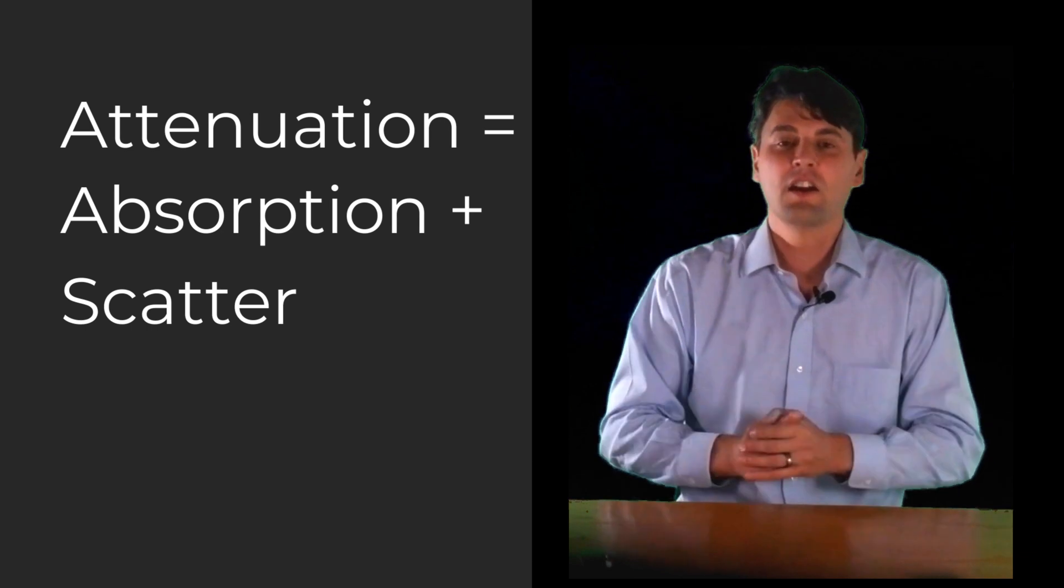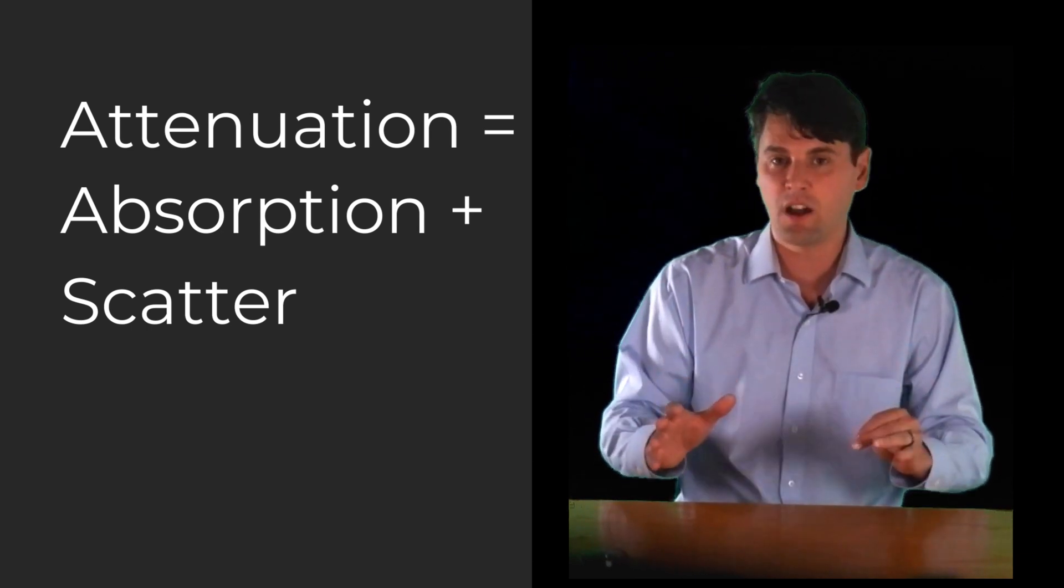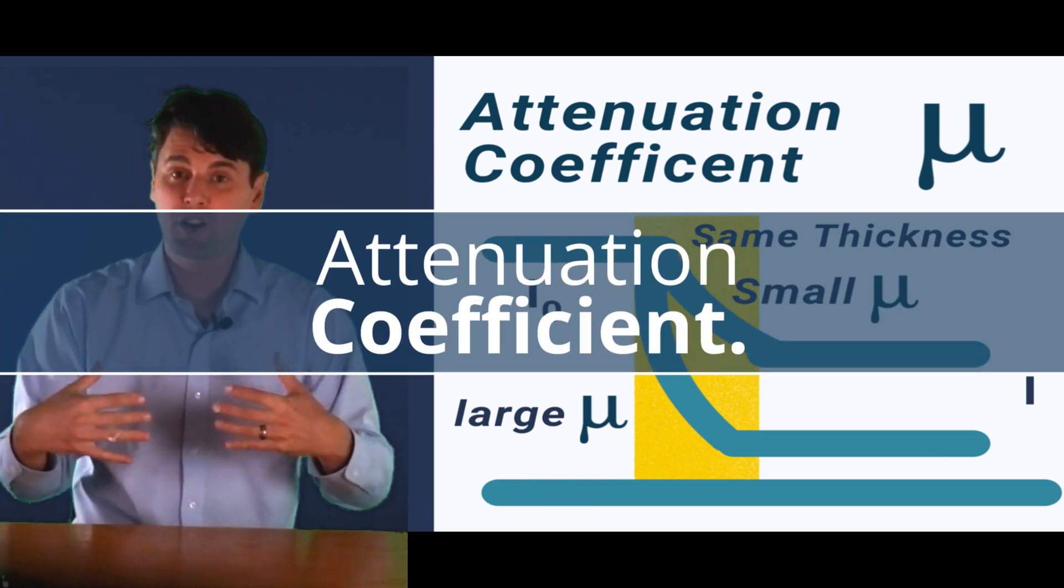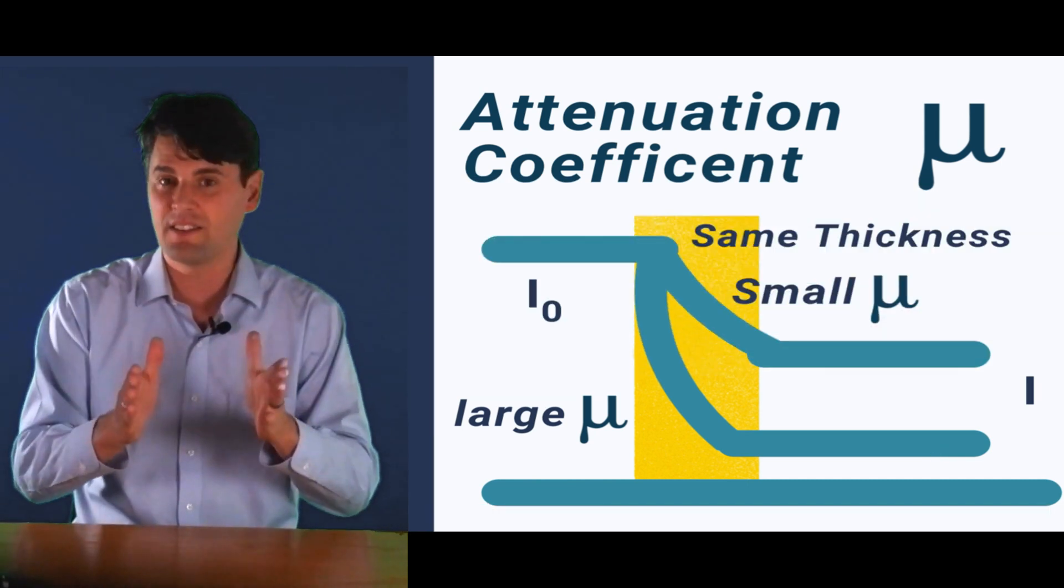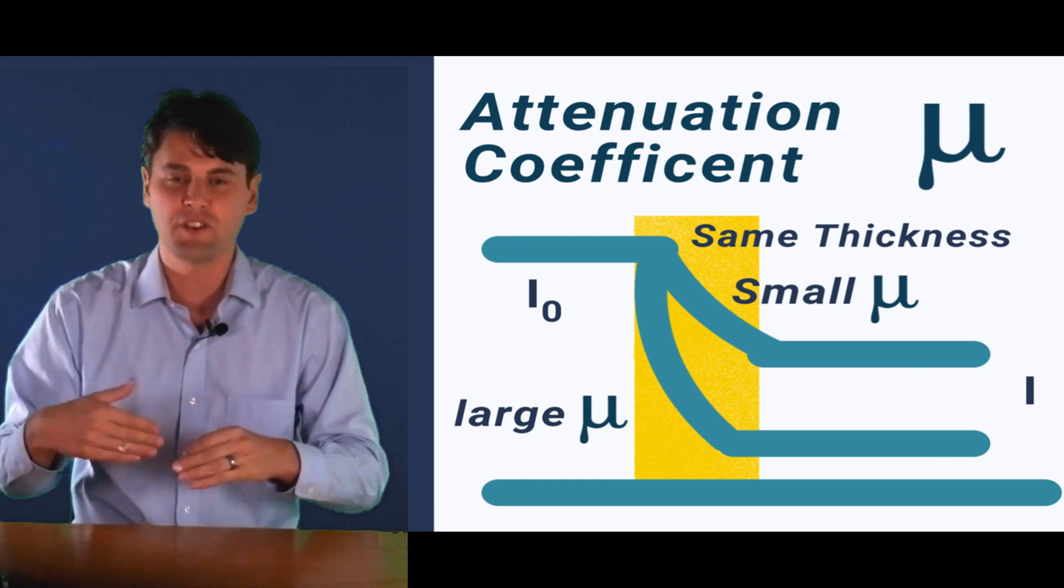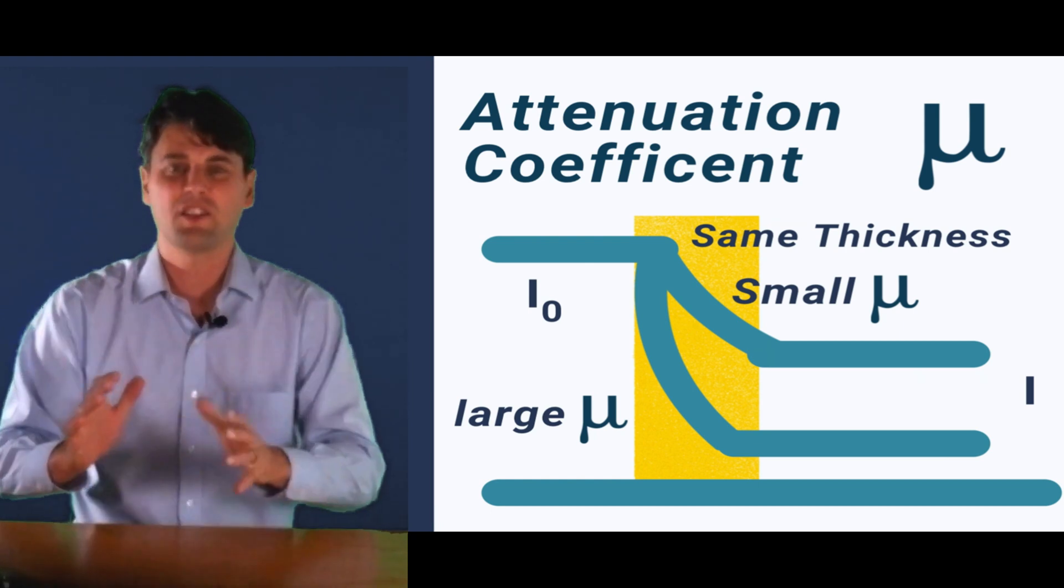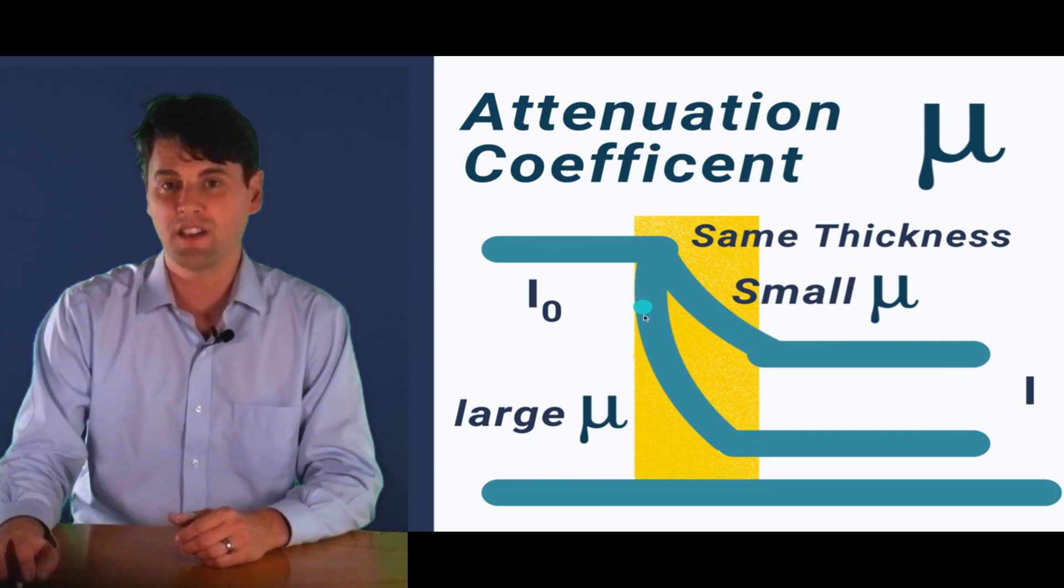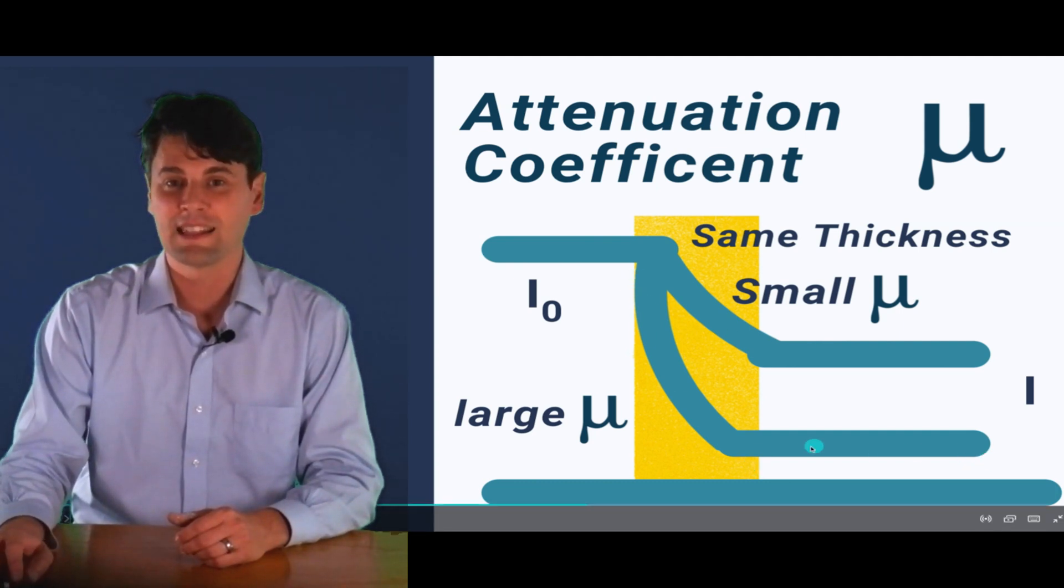Let's talk about the attenuation here. The attenuation is just the sum of absorption due to photoelectric effect or scatter. If the x-rays are absorbed or if they're scattered, in either case we call those x-rays attenuated—they're no longer in the primary beam. Attenuation coefficient measures how much attenuation happens in a given distance. For the same thickness, if you have a smaller attenuation coefficient—we use this Greek symbol mu (μ) to denote the attenuation coefficient—you're going to end up with more penetration. And if you have a larger attenuation coefficient, you're going to end up with less penetration.